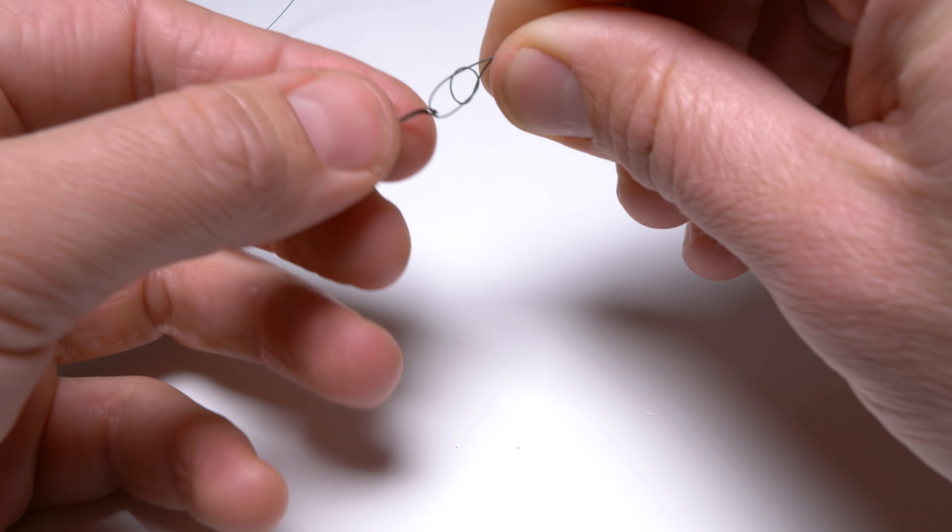So now we want to grab that sergeant's knot and a hook, and holding our tag end, do five wraps around the hook link.